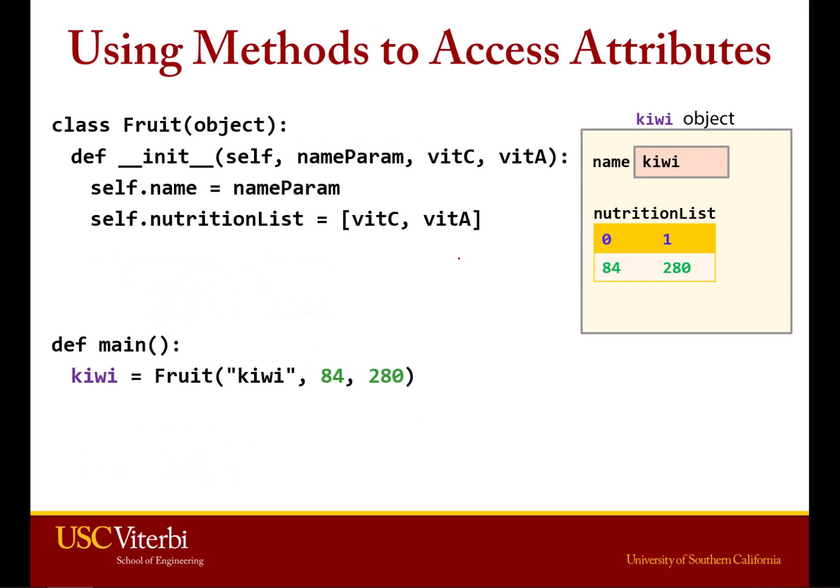We can also provide methods to access attributes. You might say, well, maybe the setter is useful, but why would we need to access attributes through a method? Well, sometimes it can really simplify the process in addition to providing a concept of privacy, which is another useful example, though not something we go deep into in this lecture.